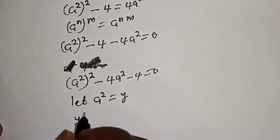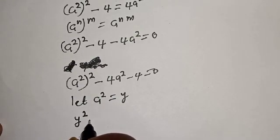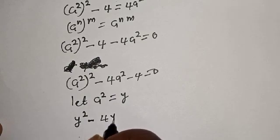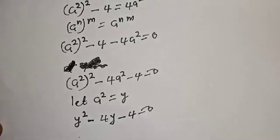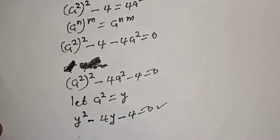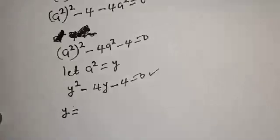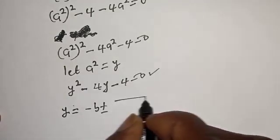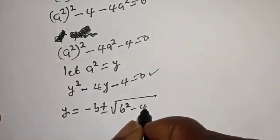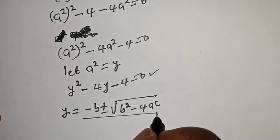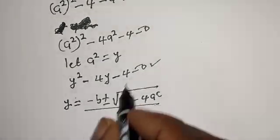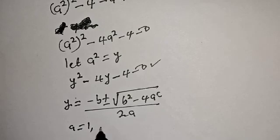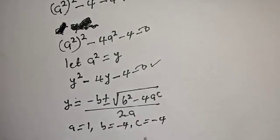This quadratic equation can be solved using the quadratic formula: y equals negative b plus or minus the square root of b squared minus 4ac, all over 2a. From the equation y squared minus 4y minus 4 equals 0, we have a equals 1, b equals negative 4, and c equals negative 4.